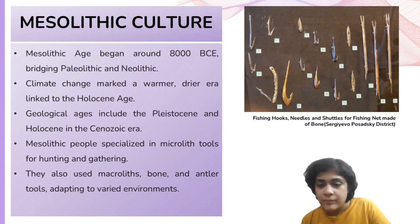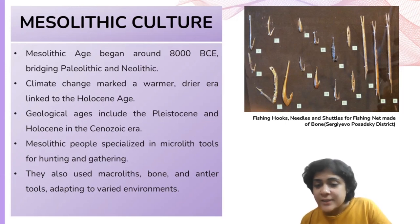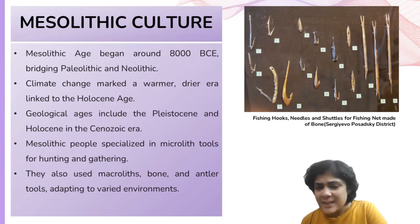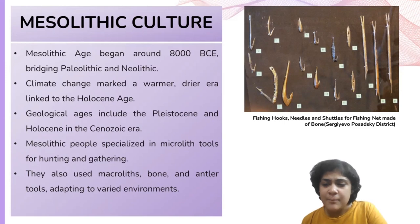Bone and antler tools were another significant category of implements used by Mesolithic people. Bone tools mainly comprised barbed harpoons, varying in the number, location, and shape of barbs, and served as fish hooks and points. Bones were also employed as hafts for crafting composite tools. Antlers, typically shaped from the brow region, were fashioned into axes; in some instances, axes and adzes were hafted into antler handles.